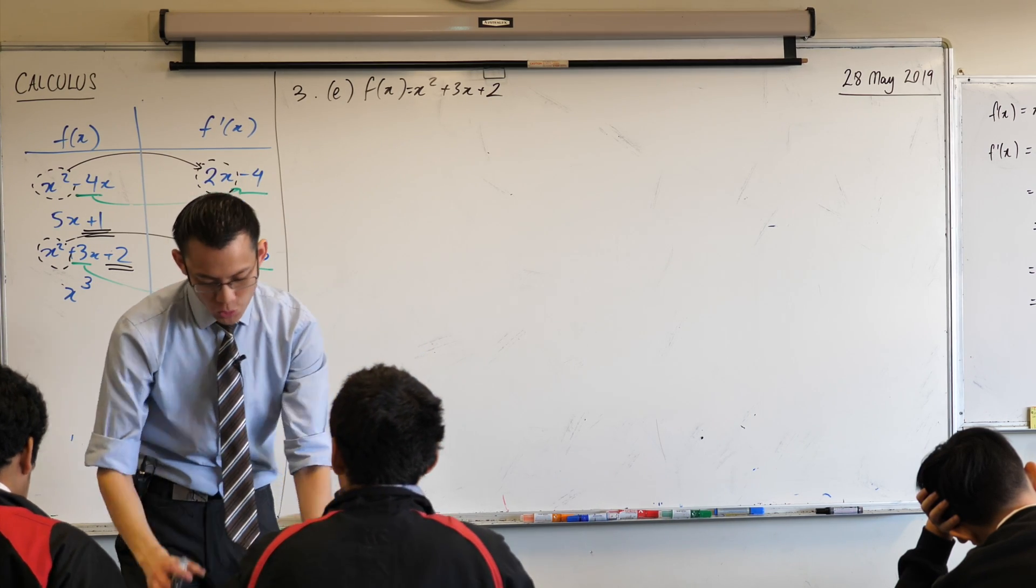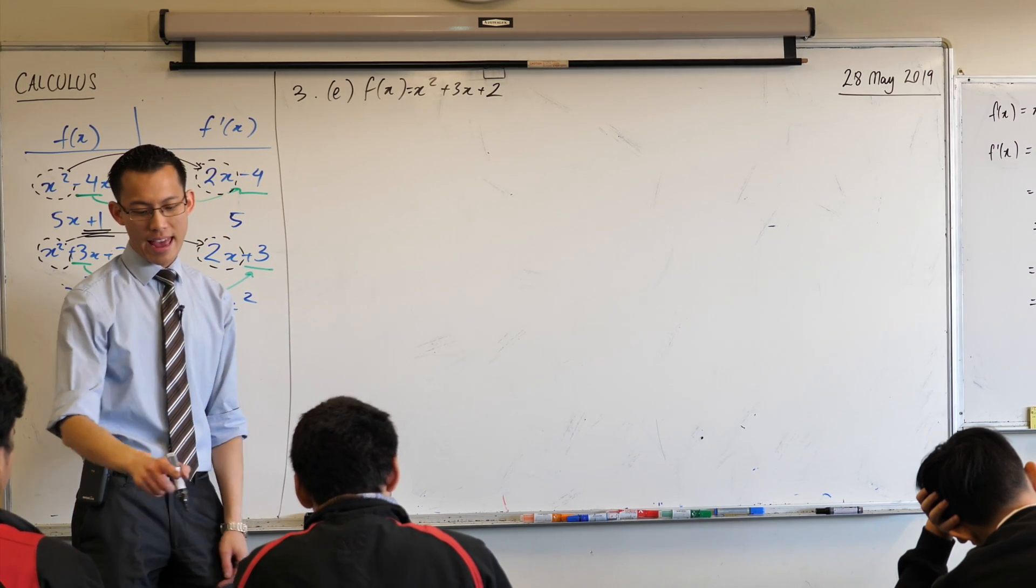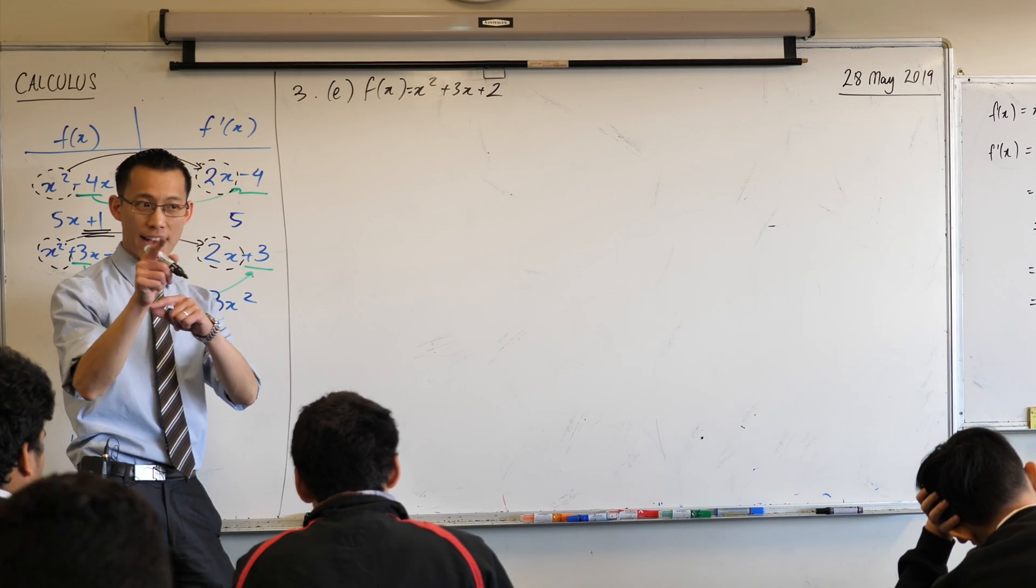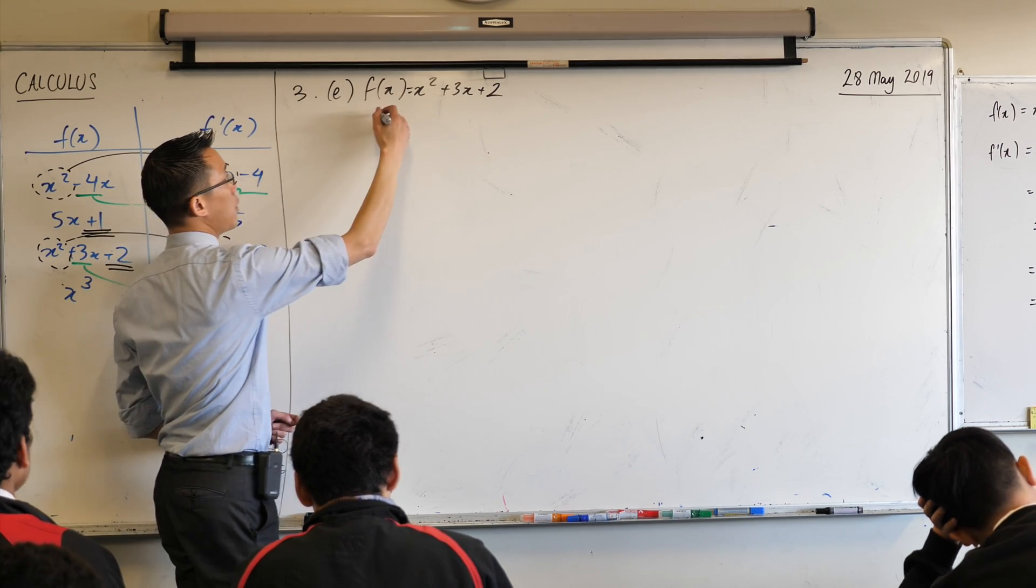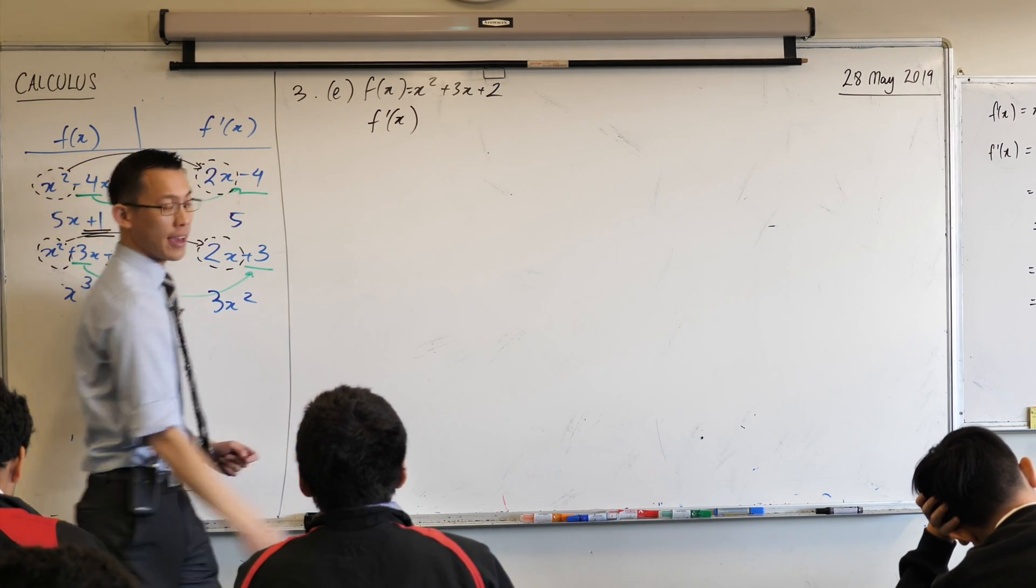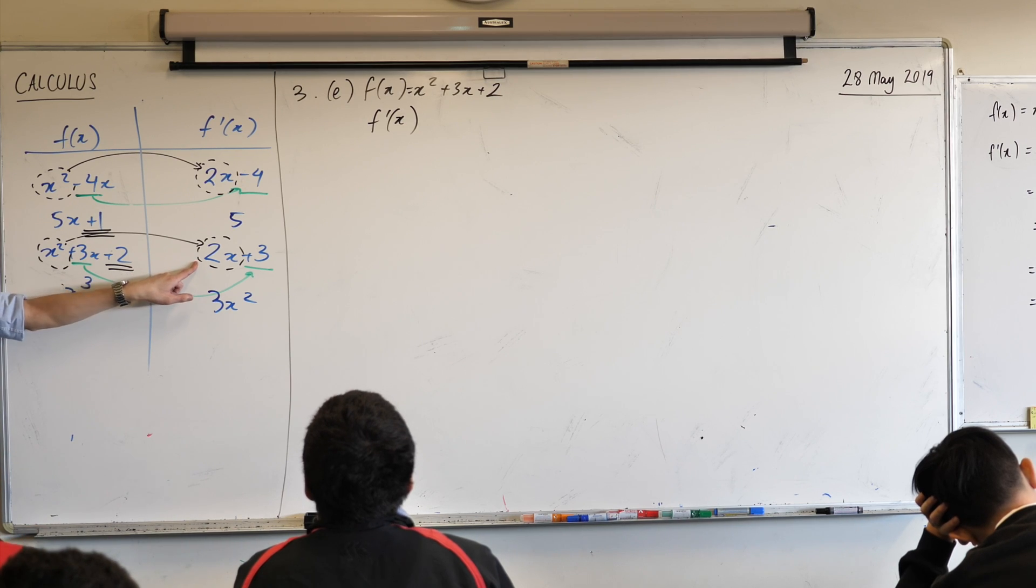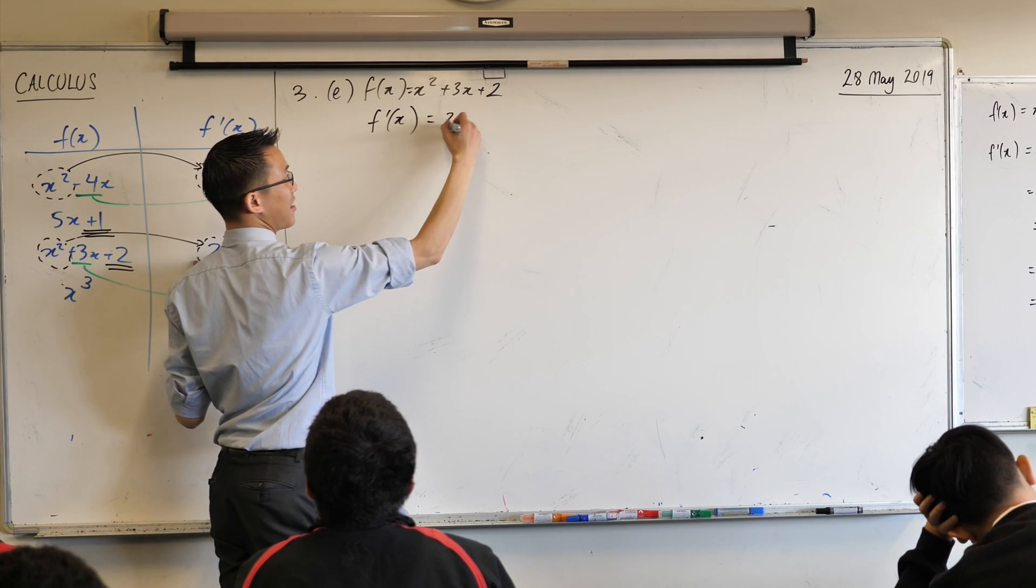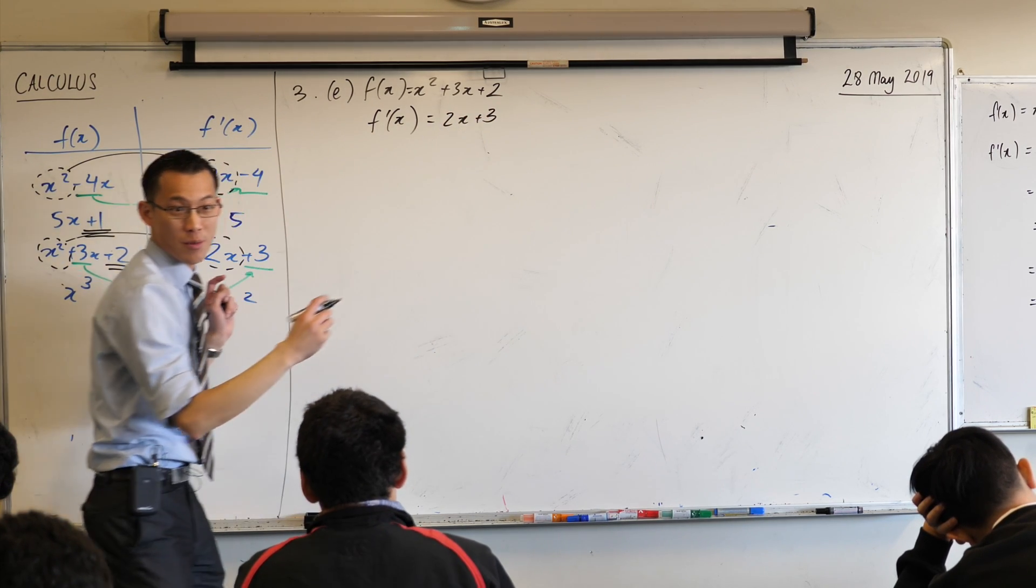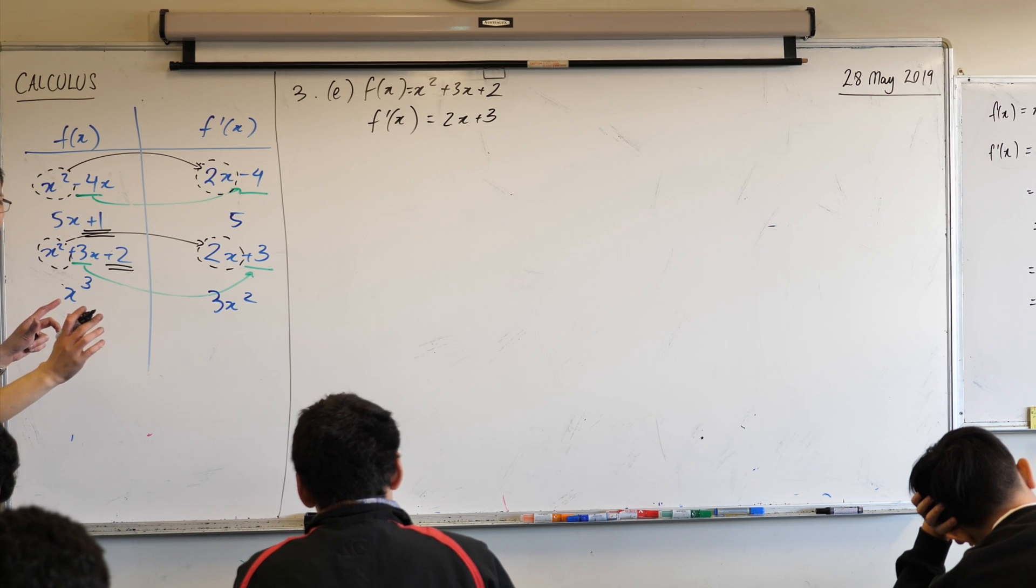It says, use the derivative to evaluate f, and the way we'd read that is f dash 2. So we worked out f dash x, it's right here. So it's 2x plus 3. Yeah? So far so good?